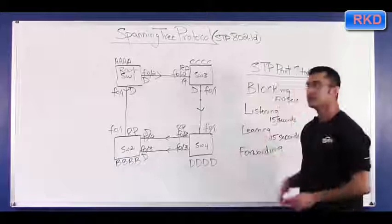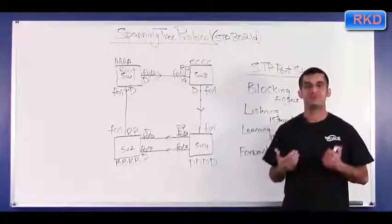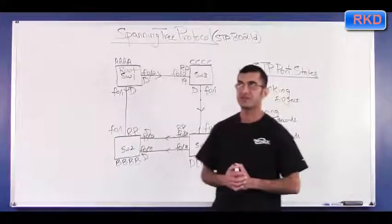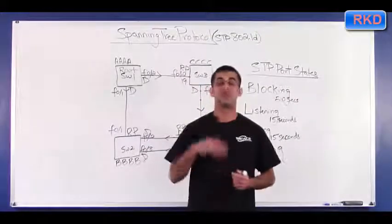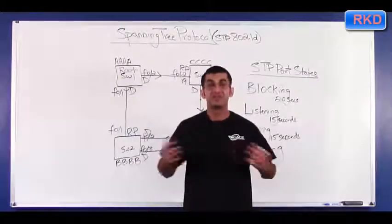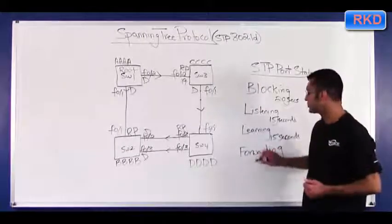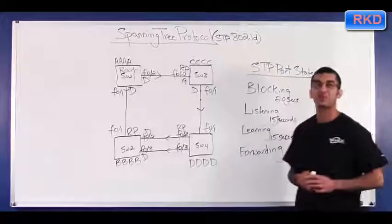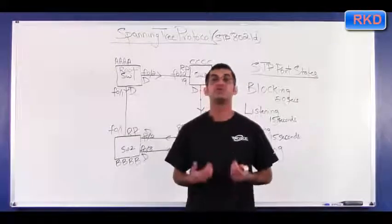In learning, there is no data traffic flowing, but the switch is still populating its MAC address table. What happens when a destination address does not exist in a MAC address table for a switch? The switch floods the frame. So to reduce flooding once the switches do start forwarding data traffic, you take these 15 seconds to populate the MAC address table as much as possible to reduce flooding once forwarding starts.